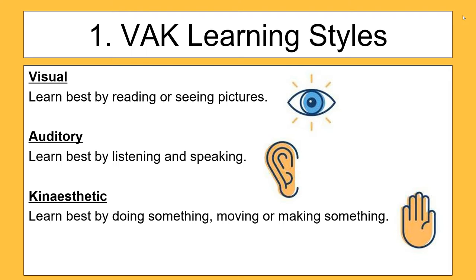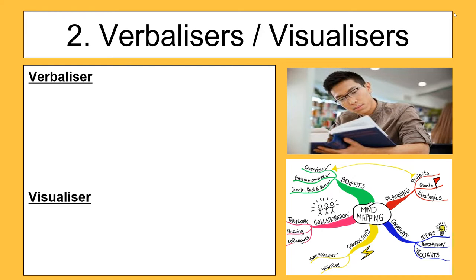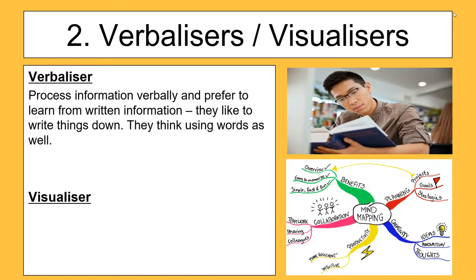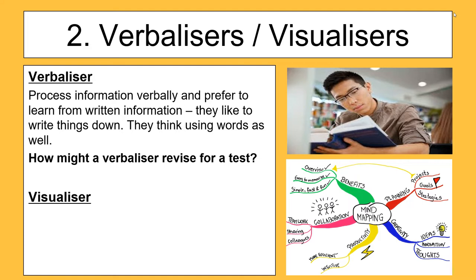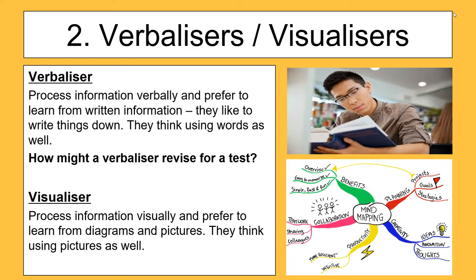After the VAK, more learning styles came out. The other ones we need to be aware of for our psychology exam are Verbaliser and Visualiser. A verbaliser likes to process information verbally — they learn from written information, basically using words. So they like to read a book, listen to a podcast, maybe record themselves. These revision strategies are important because we could get asked how a verbaliser likes to revise. A visualiser prefers visual information — learning from diagrams and pictures, and often thinking in pictures too. They might revise through mind mapping, drawing diagrams, or flow charts.